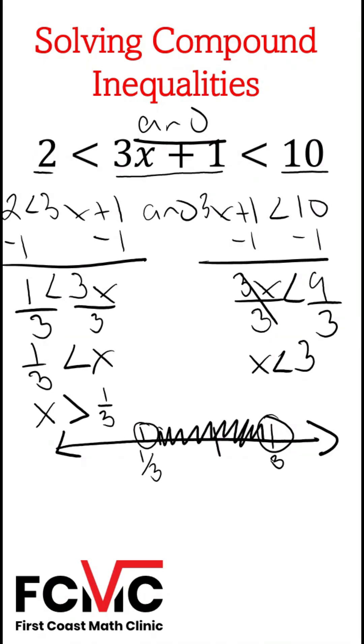So the value in between 1 third and 3 that we can check, an easy value is going to be 1. Let's put 1 in for x. So I'll have 2 is less than 3 times 1 plus 1, and we'll get 2 is less than 4, and then we'll get 3 times 1 plus 1 is less than 10, and we'll get 4 is less than 10, and both of these checks are true statements.